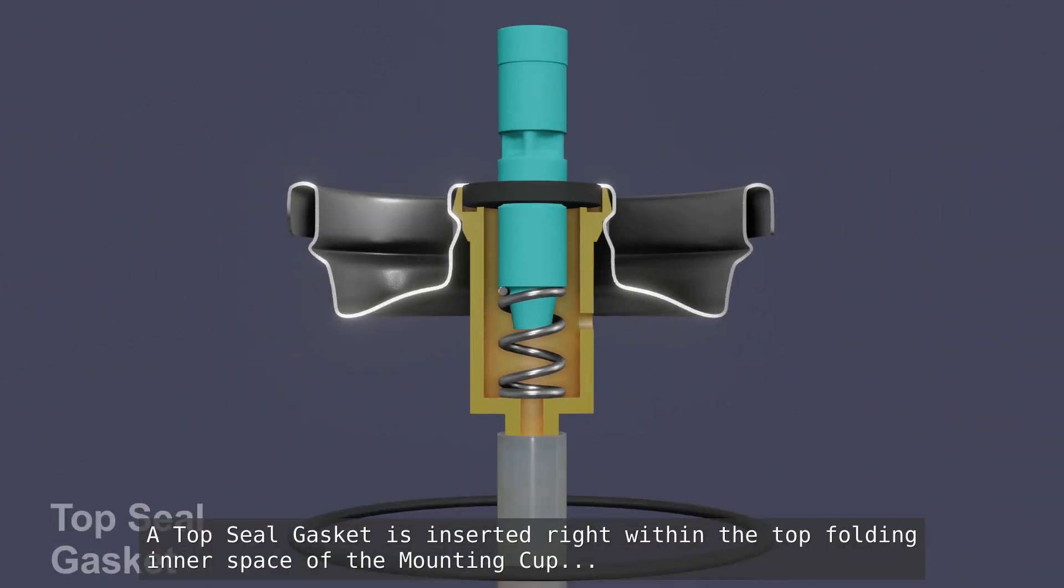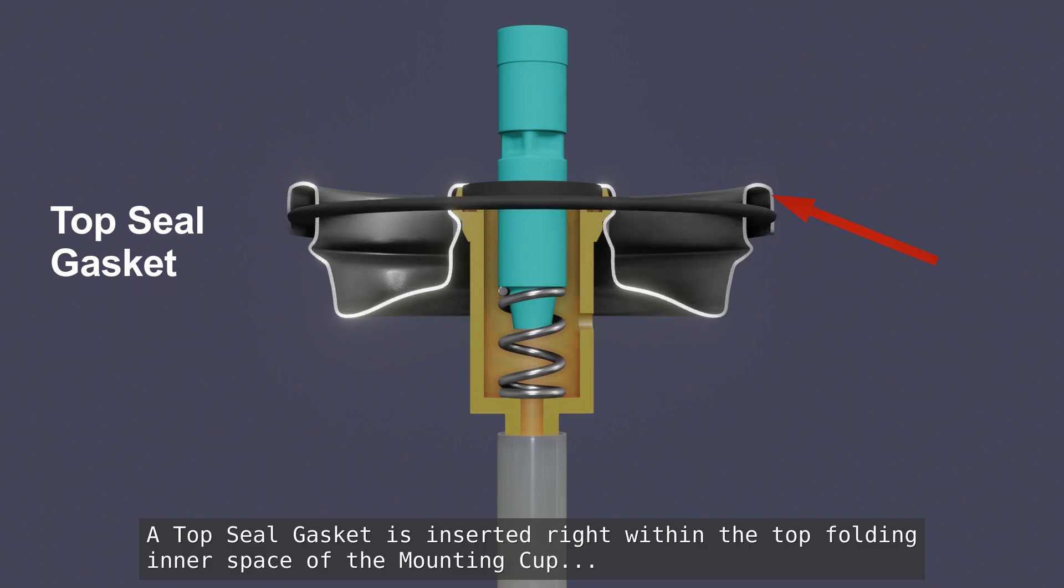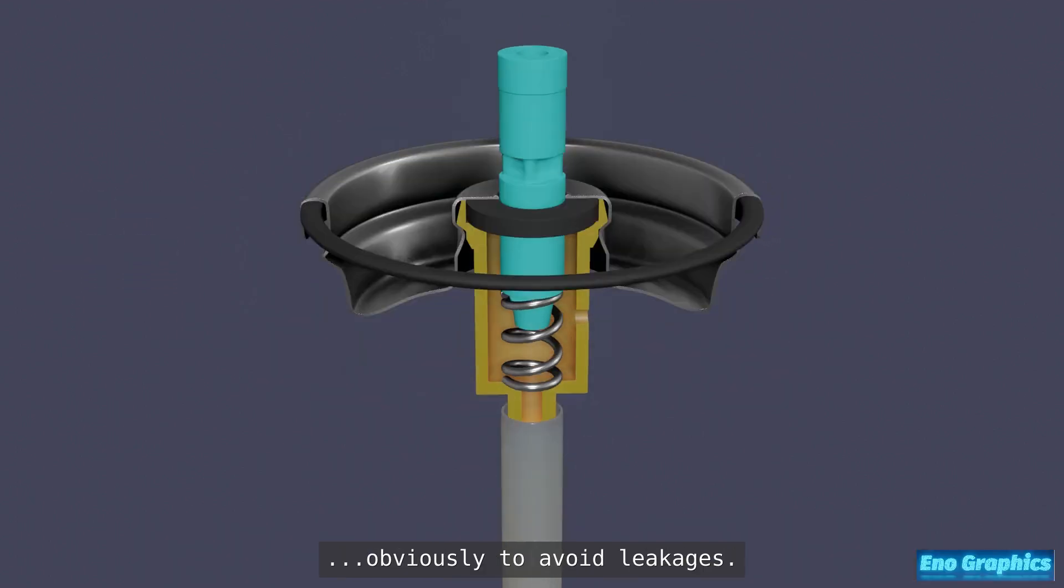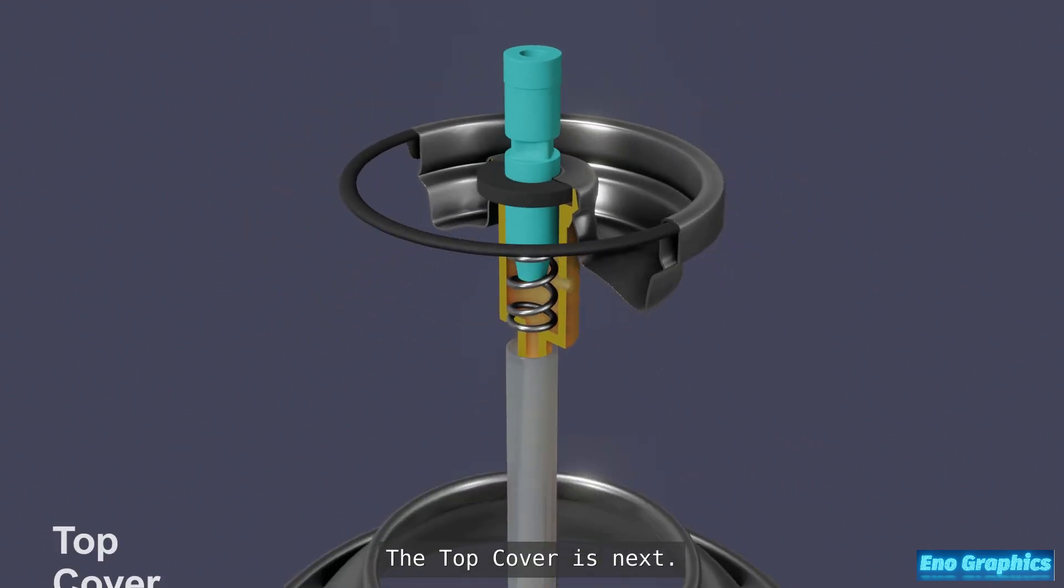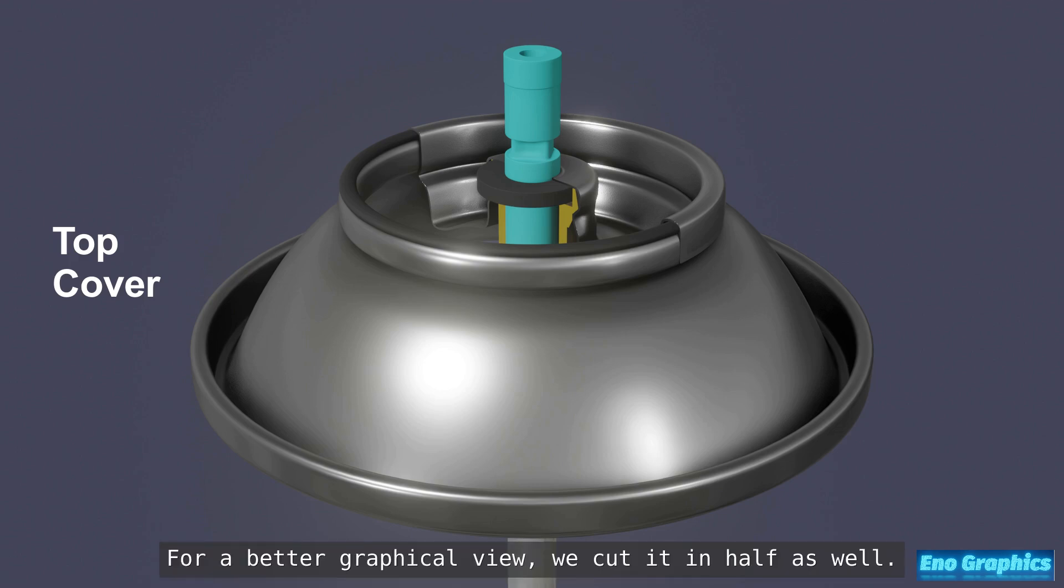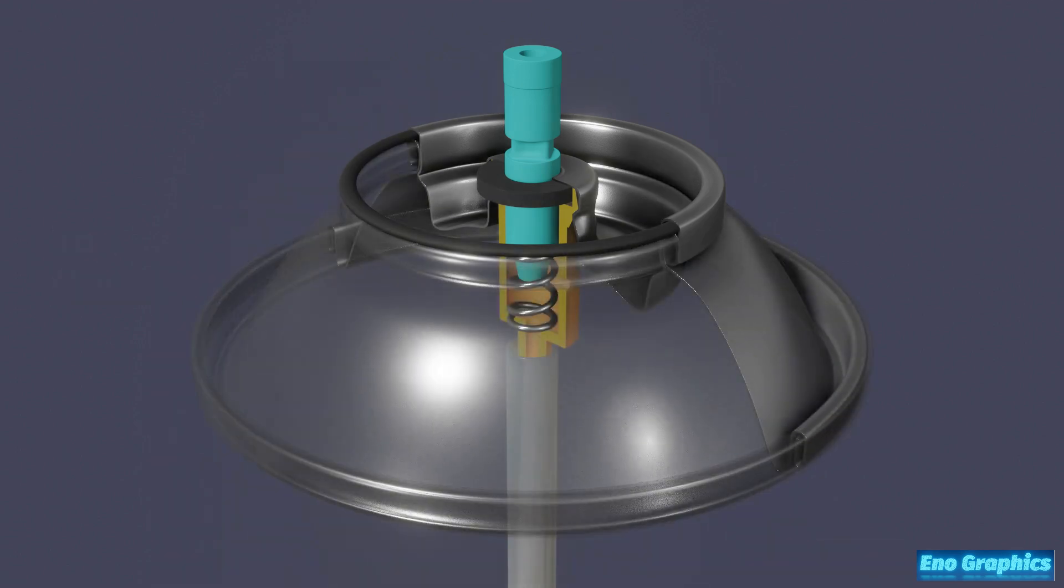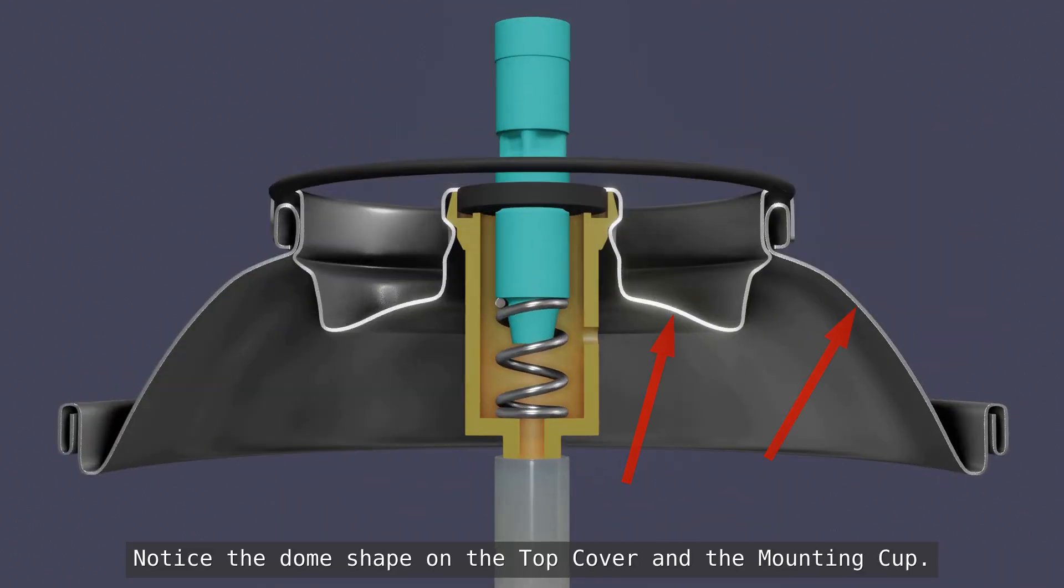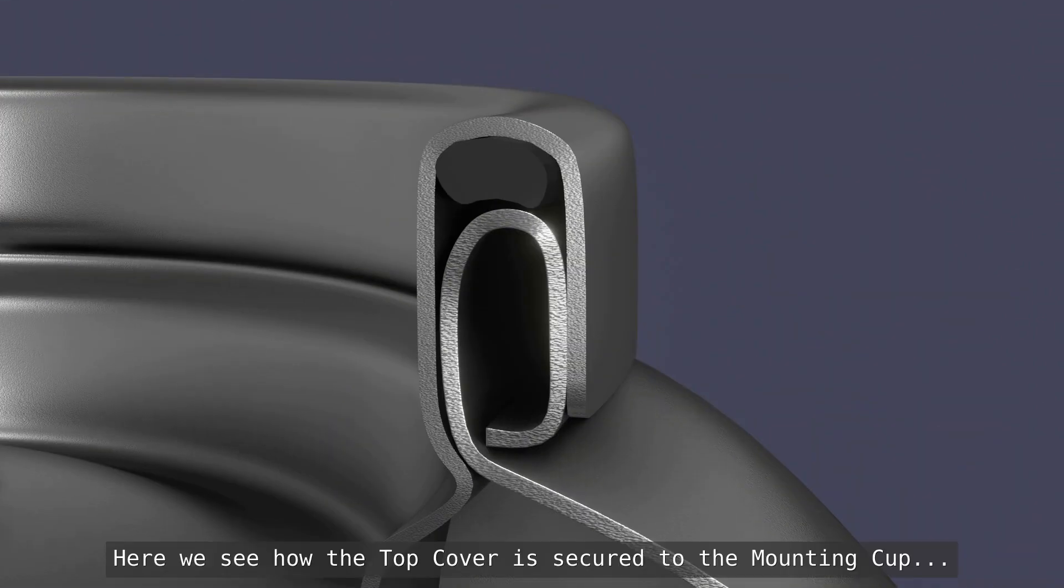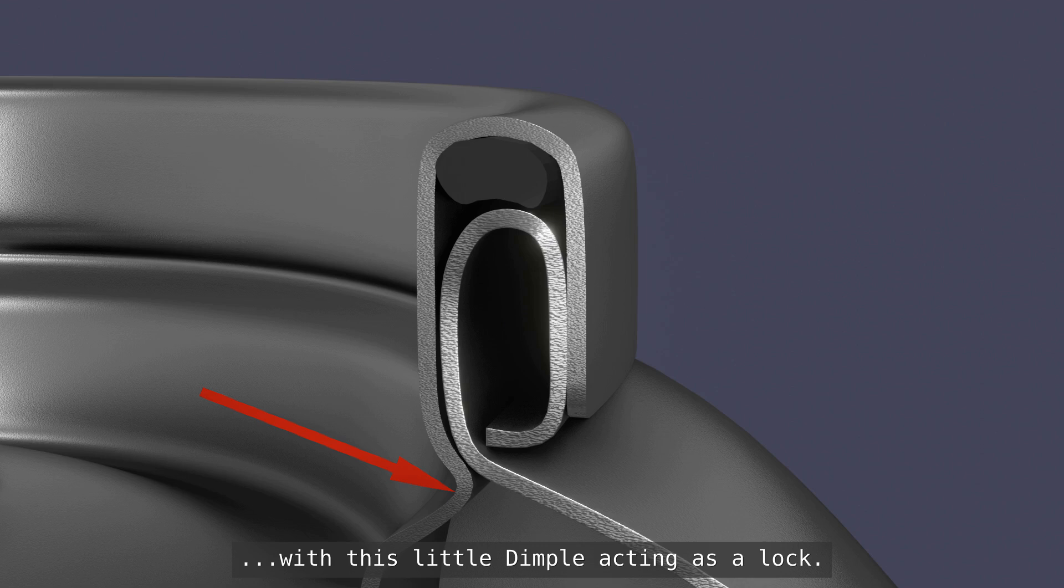The top seal gasket is inserted right within the top folding inner space of the mounting cap, obviously to avoid leakages. The top cover is next. It's fixed to the mounting cap. For a better graphical view, we cut it in half as well. Notice the dome shape on the top cover and the mounting cap. Here we see how the top cover is secured to the mounting cap, with this little dimple acting as a lock.